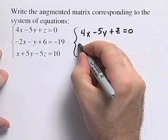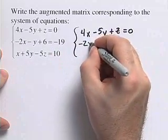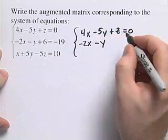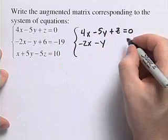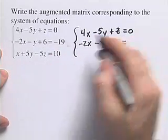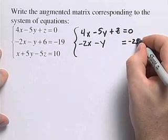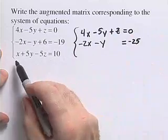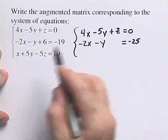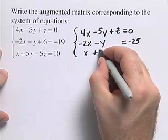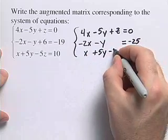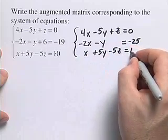In our second equation, we're going to write negative 2x minus y. There's no z term, so we'll leave that space there. We're going to subtract 6 from both sides, so we'll have minus 25. This third equation is okay. We're just going to rewrite that: x plus 5y minus 5z equals 10.